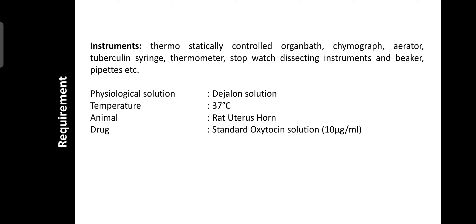Regarding requirements, the instruments used are: a thermostatically controlled organ bath, kymograph, aerator, tuberculin syringe, thermometer, stopwatch, dissecting instruments, and beaker. The physiological salt solution required is De Jalon's solution. The temperature condition is 37 degrees centigrade. The animal used is the rat, from which we isolate the uterus horn. Drugs required are standard oxytocin solution at 10 microgram per ml and the test oxytocin solution under bioassay.